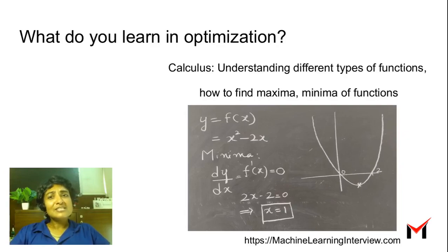What do you first learn in optimization? Most of us have been through high school calculus, where we learned about different types of functions and how to find the maxima and minima. You can see an example here. We know that to find the minima, we need to set the first derivative to 0 and then look at the second derivative.